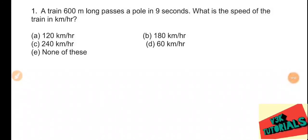Hello friends, welcome to our channel. Problem number one: a train 600 meters long passes a pole in nine seconds. What is the speed of the train in kilometers per hour? The train is 600 meters long and passes the pole in nine seconds.